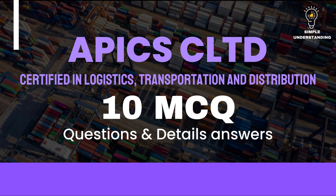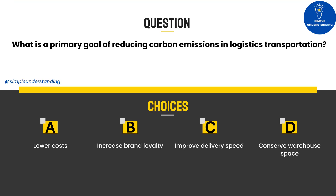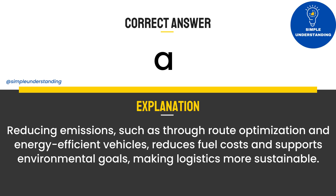Section A Practice Test. Question 1: What is a primary goal of reducing carbon emissions in logistics transportation? A. Lower costs. B. Increase brand loyalty. C. Improve delivery speed. D. Conserve warehouse space. Answer: A. Reducing emissions through route optimization and energy-efficient vehicles reduces fuel costs and supports environmental goals, making logistics more sustainable. Question 2: Which practice is essential in sustainable warehousing? A. Installing carpeted flooring. B. Using renewable energy sources. C. Increasing lighting hours. D. Reducing warehouse staff. Answer: B.